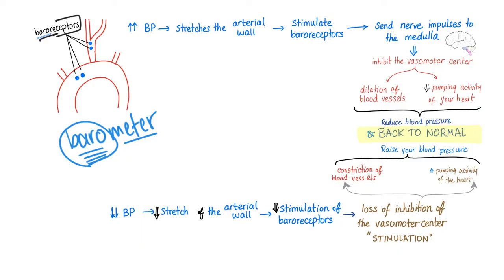On the other hand, if you have low blood pressure, stretching of the arterial wall will decrease, which will lead to less stimulation of baroreceptors, loss of inhibition of the vasomotor center — and loss of inhibition equals stimulation. So this leads to constriction of your blood vessels and increased pumping activity of your heart, raising your blood pressure back to normal.